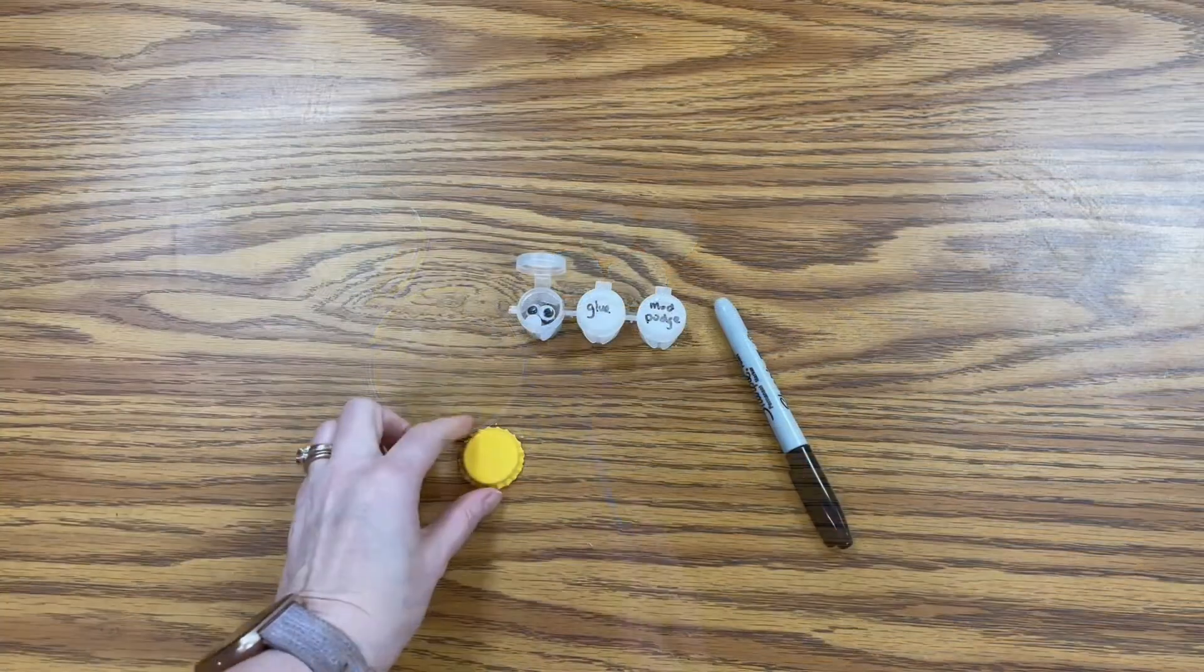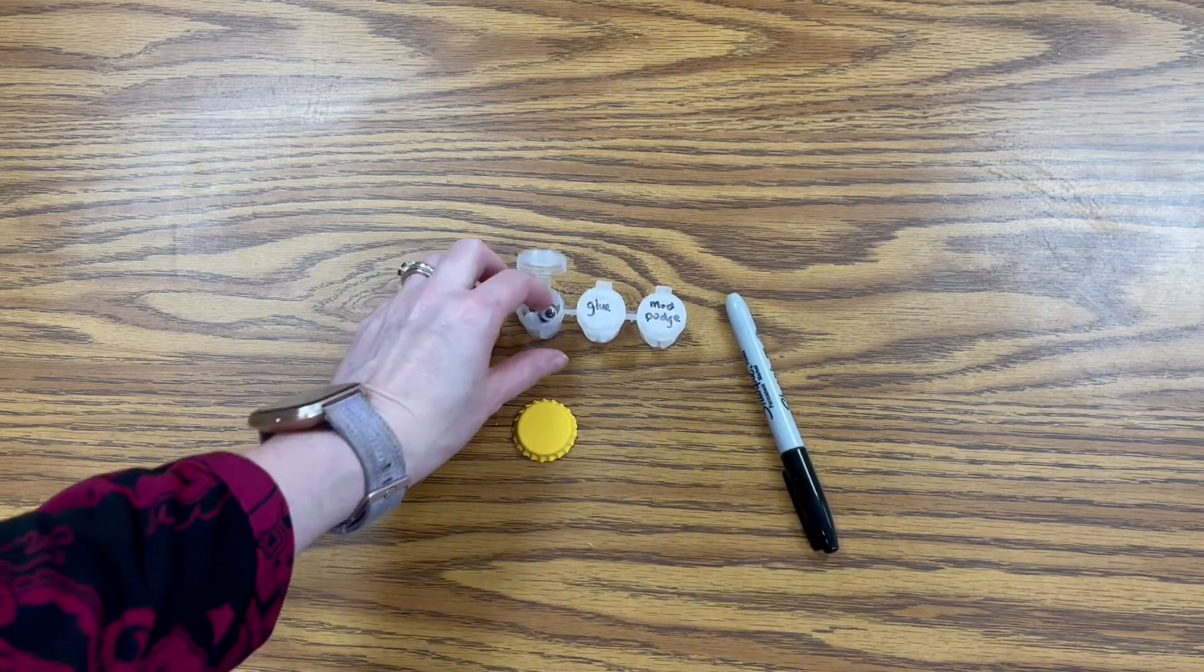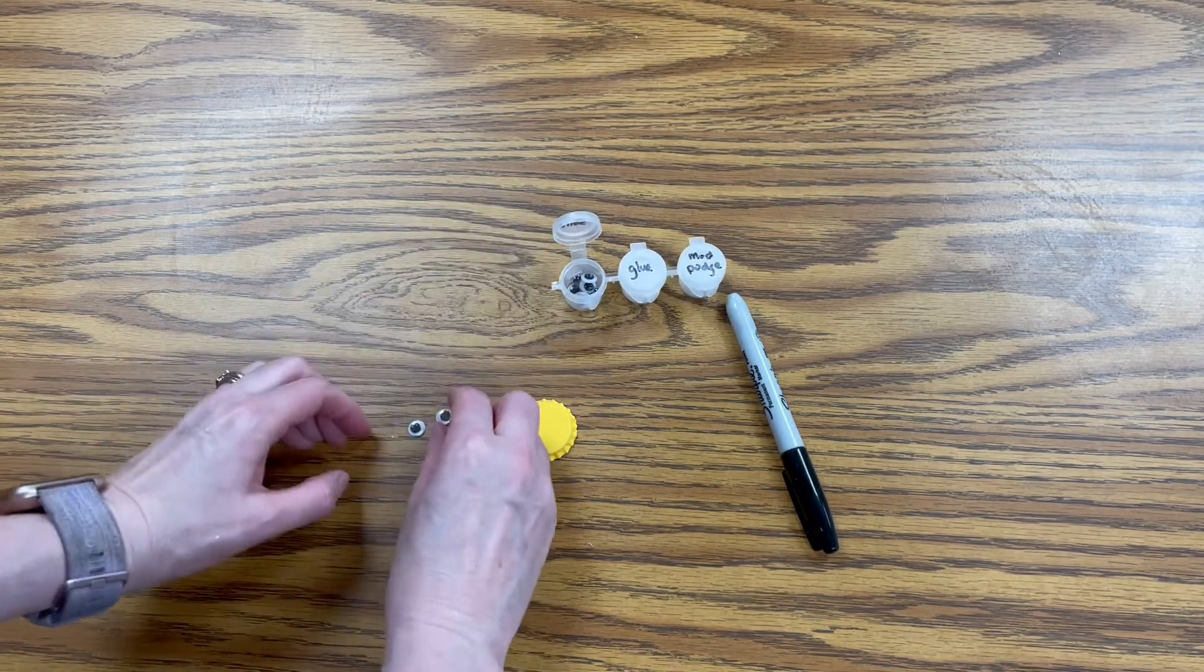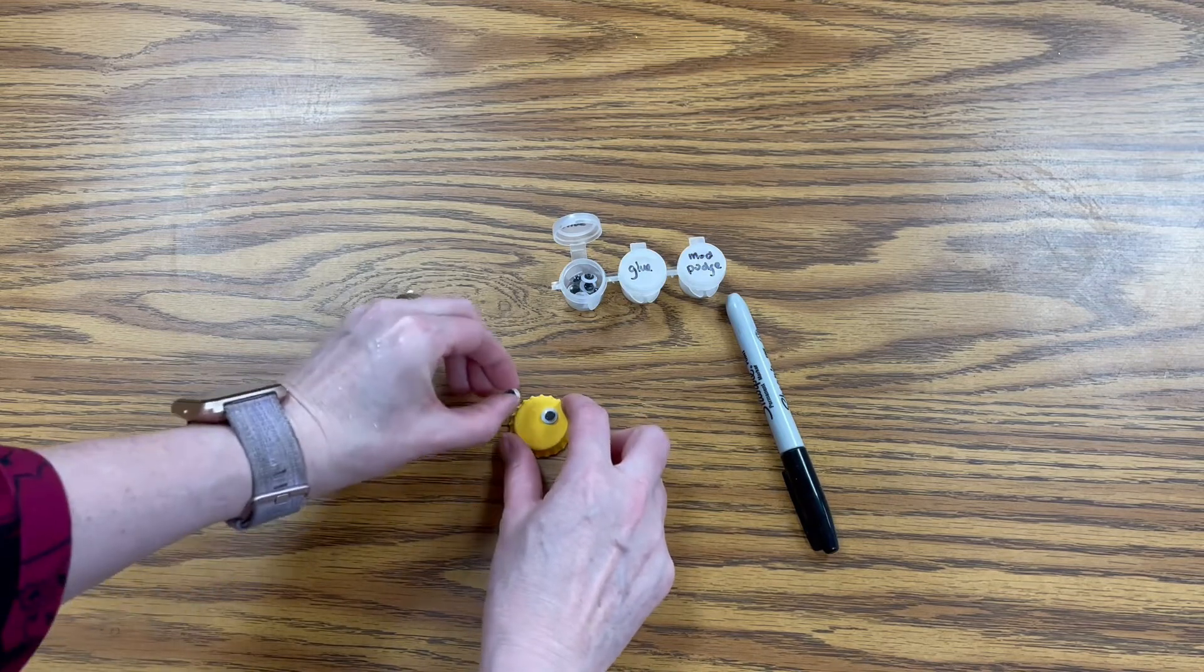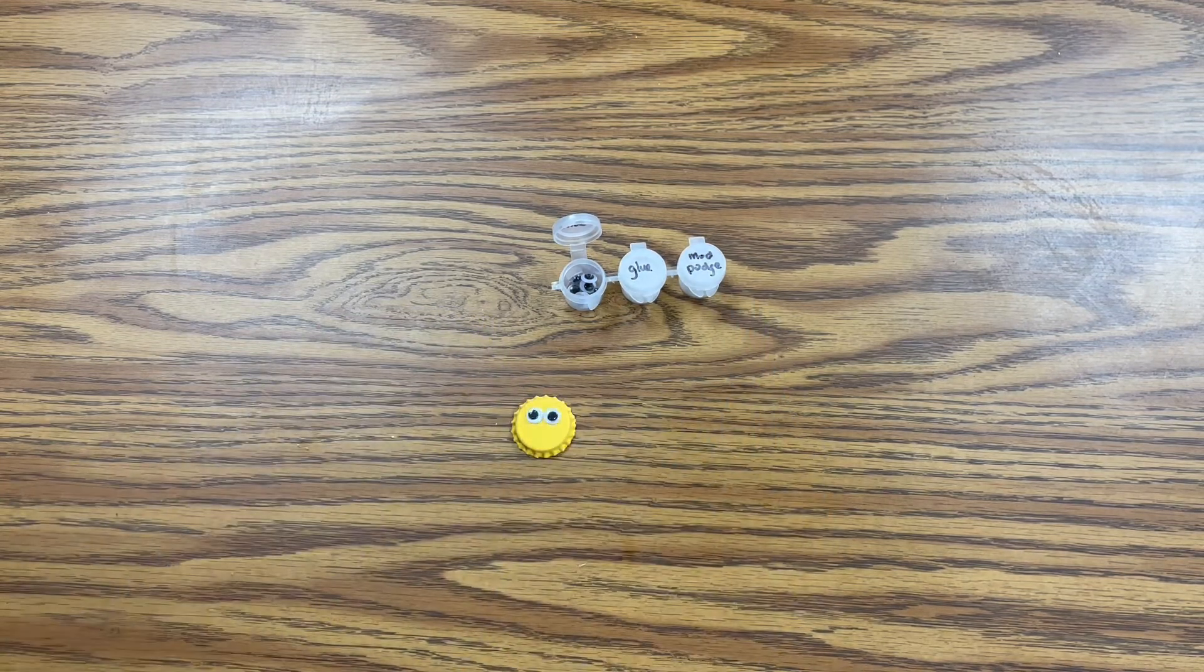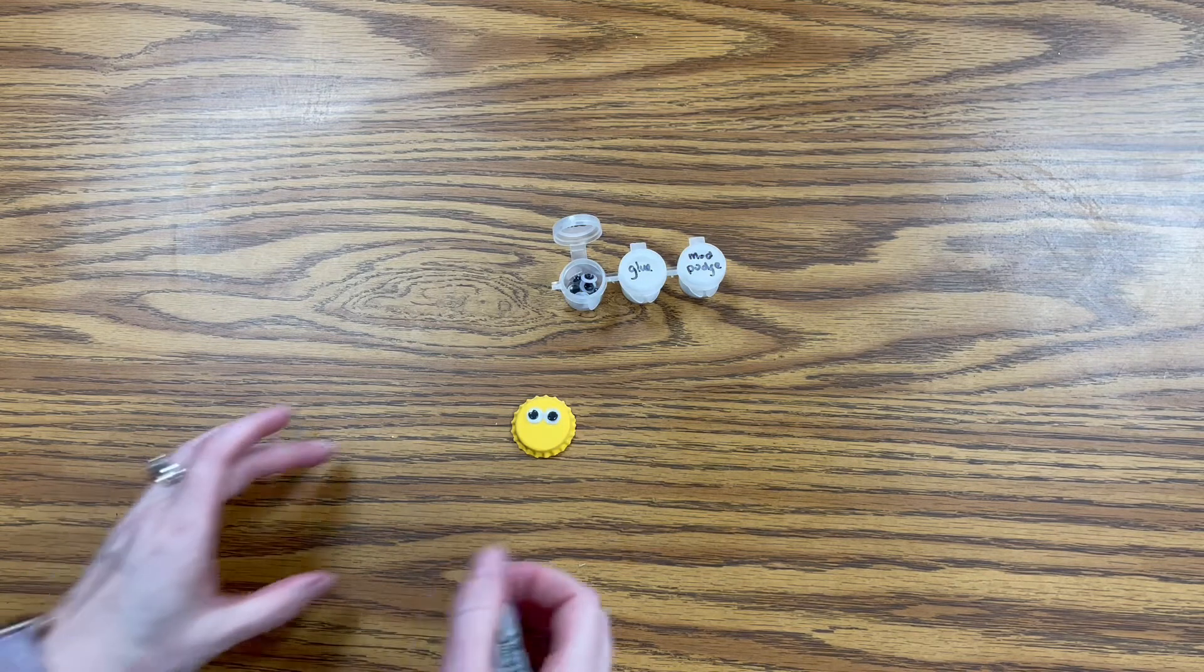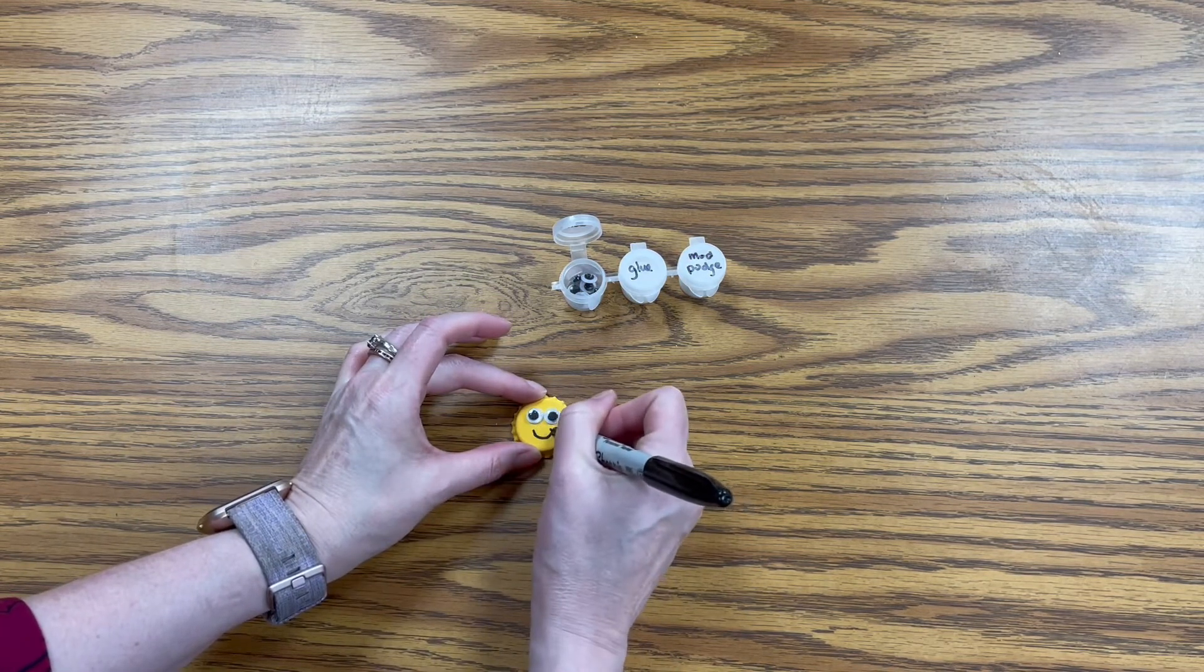Now that the paint is dry, you're going to take your sharpie and your googly eyes. Take out one set of googly eyes and position them on the bottle cap. We're not sticking them on yet, just position them however you'd like just to give you an idea. Then we're going to take your sharpie and draw a face on here. It's an emoji, so it's something pretty basic usually.